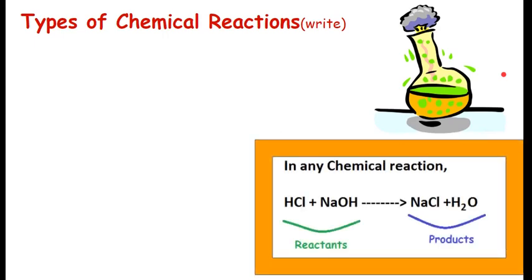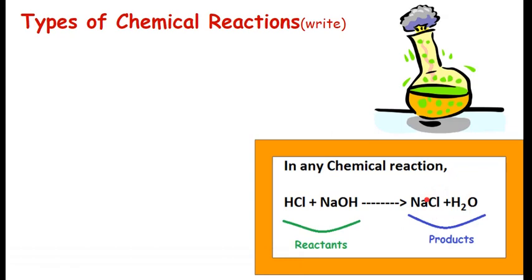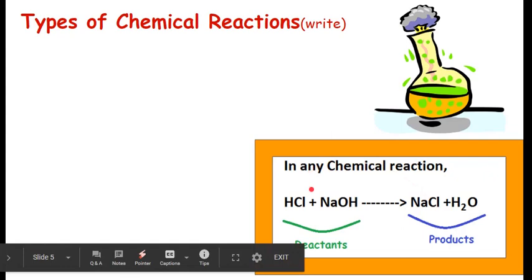In any chemical reaction, some reactants combine together and form new products. The important thing is, the products that are formed are new. They are different from the reactants. So, what's on your left side, we call them reactants, like here HCl and NaOH.